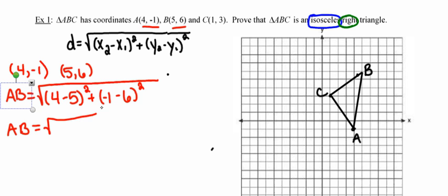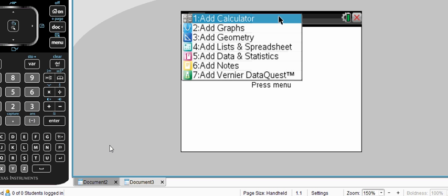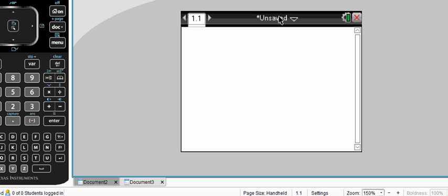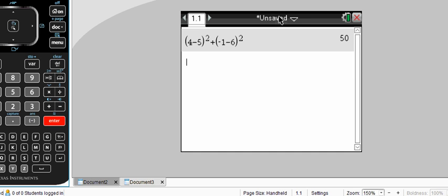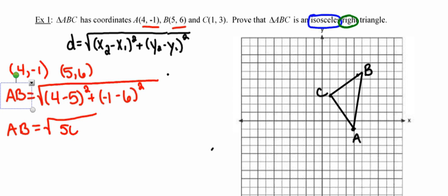Remember that when you plug distance formula into the calculator you're going to go ahead and you're going to start right with the open parentheses. So that's the square root of 50, which then becomes the square root of 25 times the square root of 2. And the square root of 25 is 5. So 5 square root of 2.